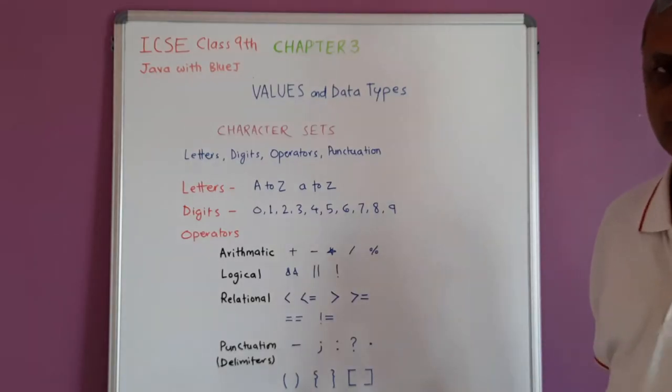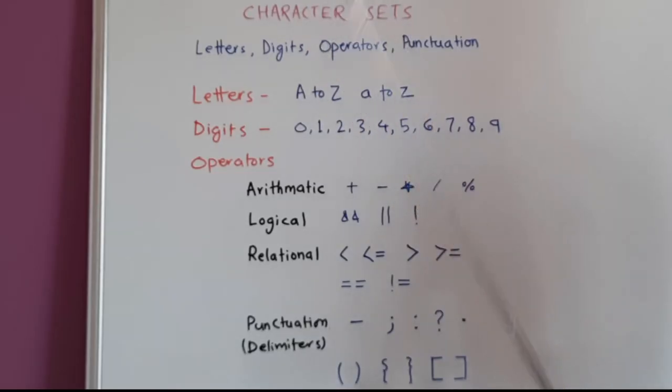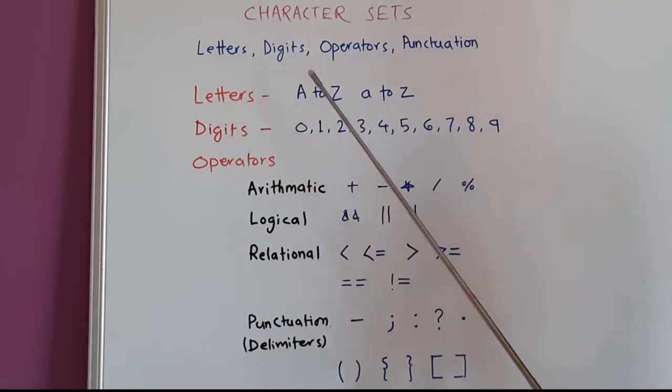Let us see what is the character set that can be used in Java programming. We can use letters, digits, operators, and punctuation marks, which are also called delimiters. We can use all the characters of the English language, which comes from the Latin characters. These are the letters, capital A to capital Z, small a to small z, all the 26 alphabets.